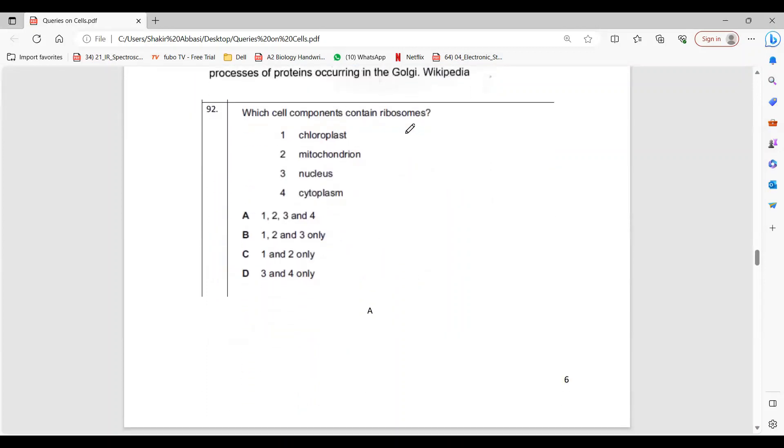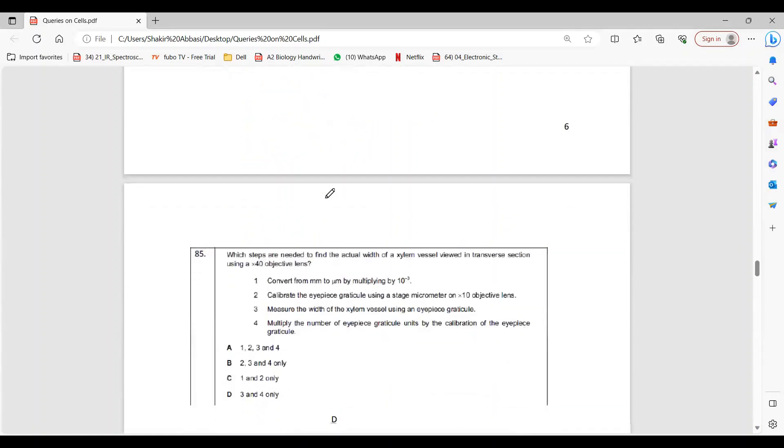So three and four are right, you can read this hint about this. Then the question is which component has ribosomes. Mitochondria has ribosome because it makes its own protein, nucleus where ribosomes are made, and obviously cytoplasm also has ribosome. So A is the answer.